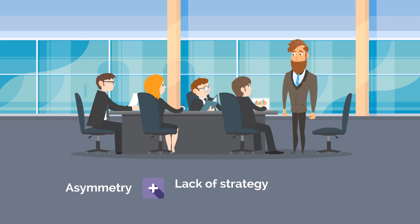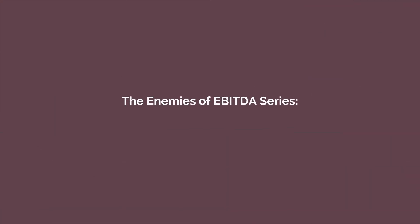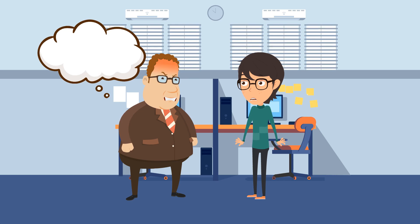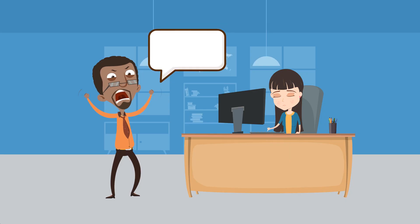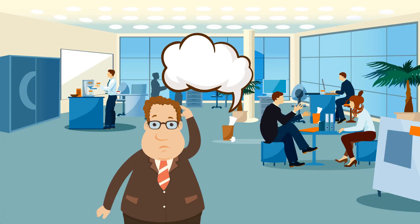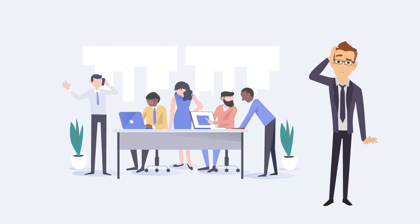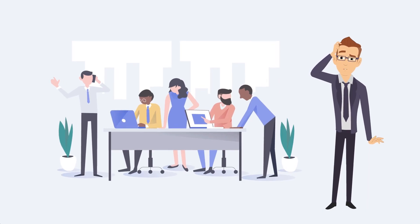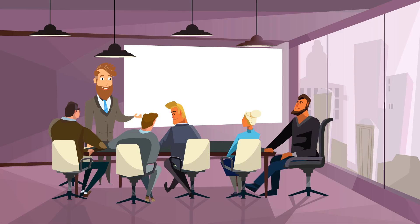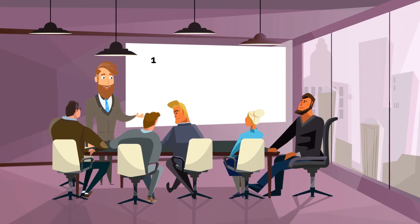For many businesses, asymmetry is a real problem that is not well understood and rarely confronted. Asymmetry and the lack of strategy and tactics to combat it is an enemy that must be addressed to reduce waste. Phrases like 'that's the way we do things around here' or 'where did I leave that?' — if you've ever heard these at work, you are experiencing one of the 10 enemies of profitability.